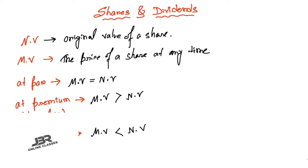To summarize the important terms: nominal value is the original value of the share; market value is the price of a share at any time; at par is when market value equals nominal value; above par is when market value is greater than nominal value; below par is when market value is less than nominal value.